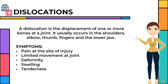A dislocation is the displacement of one or more bones at a joint. It usually occurs in the shoulders, elbow, thumb, fingers and the lower jaw. The following are the symptoms: pain at the site of injury; limited movement at the joint; deformity; swelling; and tenderness.